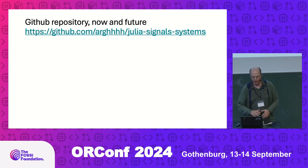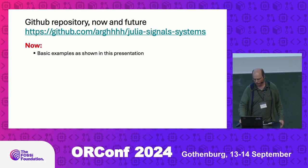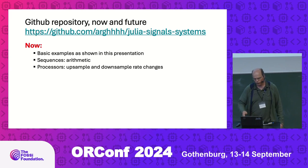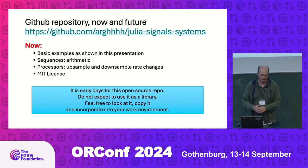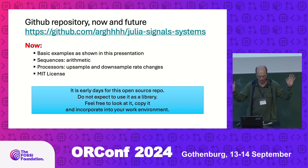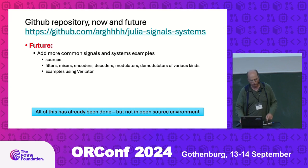The GitHub repo is there — all the action happened in the last two or three weeks. At the moment there are basic examples as shown in this presentation, arithmetic on sequences, up-sample and down-sample rate changes, and an MIT license. It's early days for this open-source repo — look at it and play with it. There's actually no reason you'd want to link to it anyway since I showed you the lines of code; just copy them. But I think you'll find some inspiration there if this sort of thing is relevant to you.